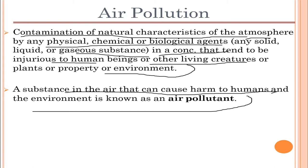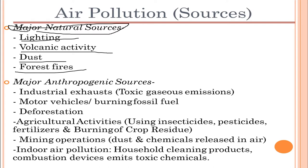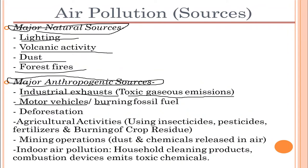A substance in the air that causes harm to humans and the environment is known as an air pollutant. Major natural sources responsible for causing air pollution include lightning, volcanic eruptions, dust, and forest fires. Major anthropogenic sources include industrial exhausts releasing toxic gases, motor vehicles, and burning of fossil fuels.